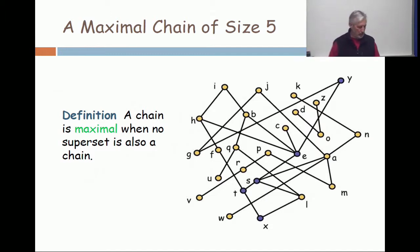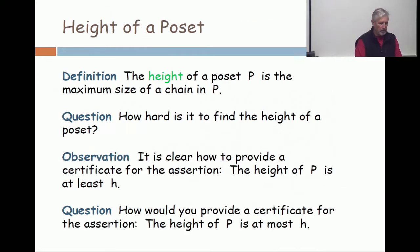All right. Here's a maximal chain of size 6. Now I've swapped some points out, obviously. X-T-S-A-N-K. That's a chain of size 6. And you can't add anything else to this set and keep it a chain. Clear from the picture?